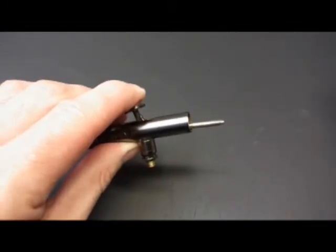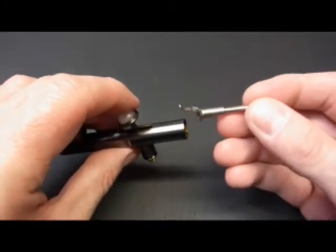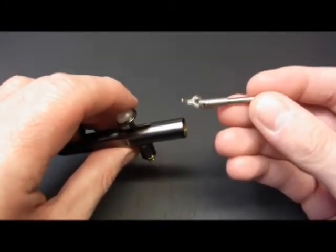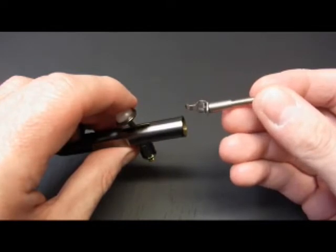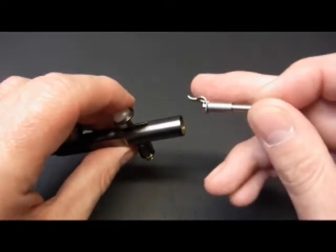And now we can remove the spring guide. This has the rocker arm actually pinned to the guide so it doesn't drop off. And it makes it easier to reassemble as well.